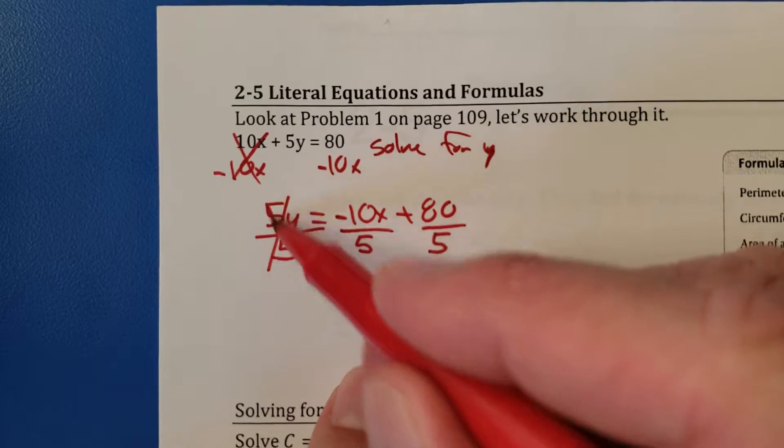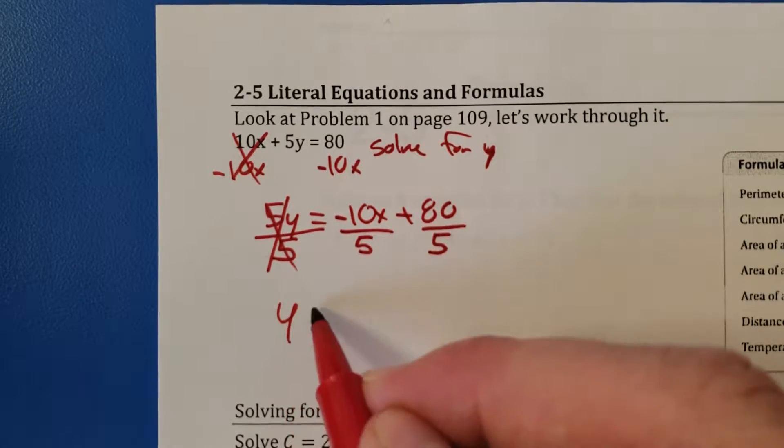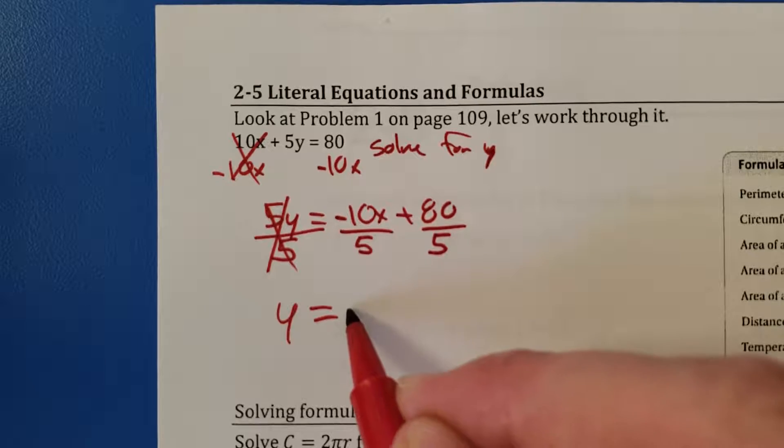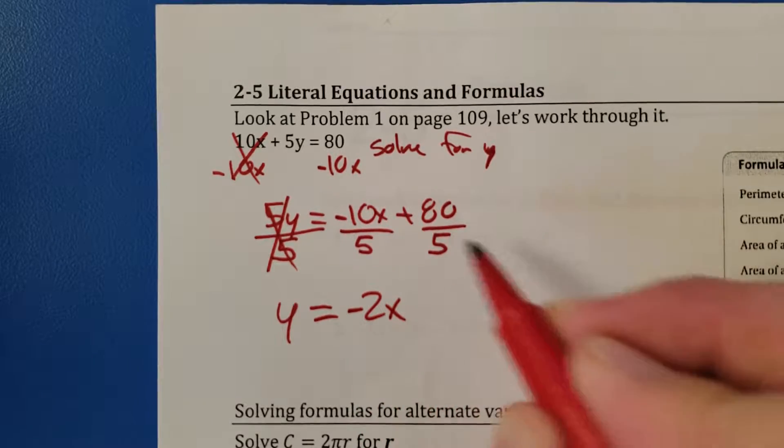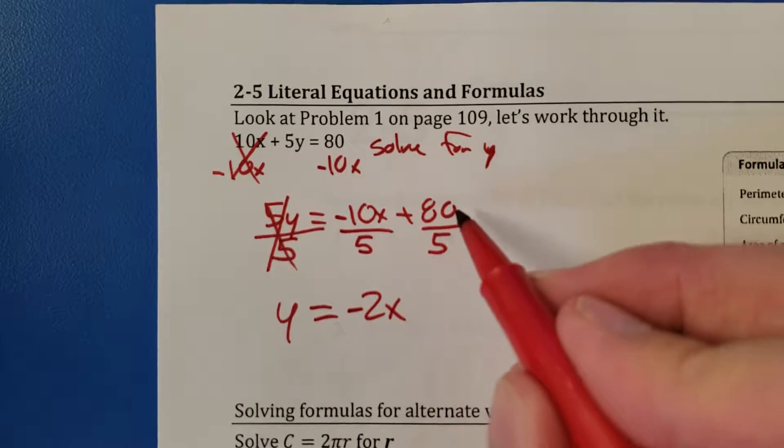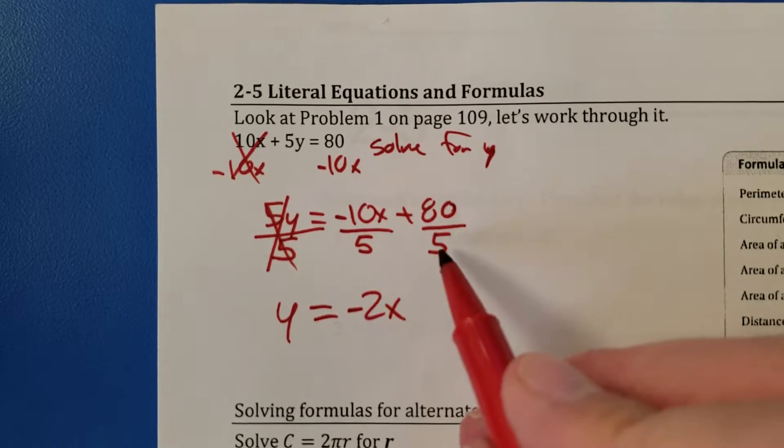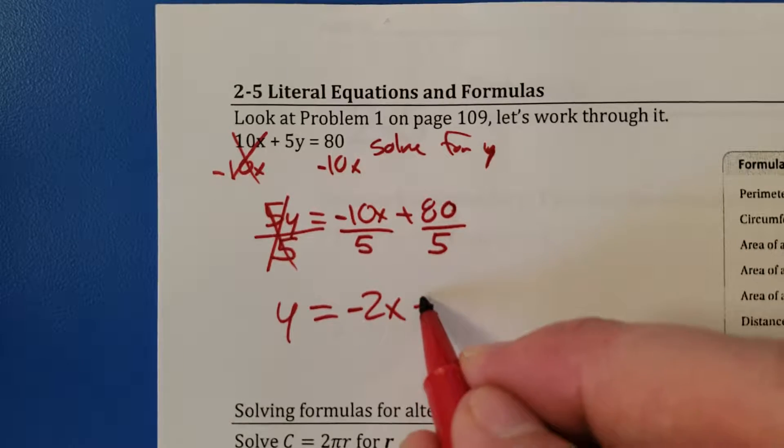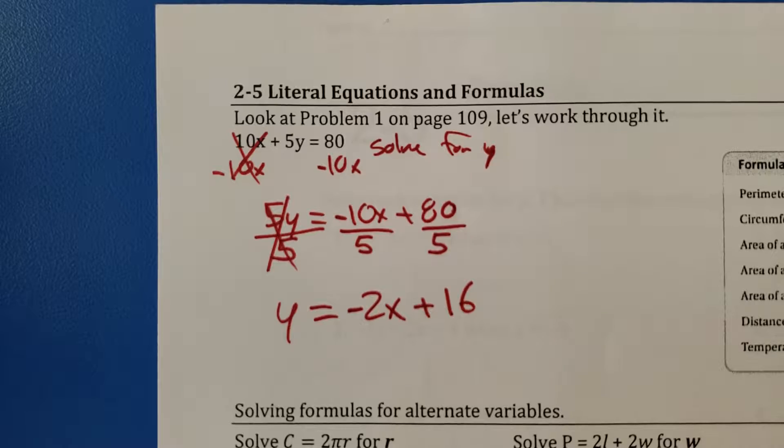So all I'm going to do is I'm going to cancel the 5. I have y equals negative 10 divided by 5 would be negative 2 with an x. X kind of comes along for the ride. And then 80 divided by 5 would be a plus 16.